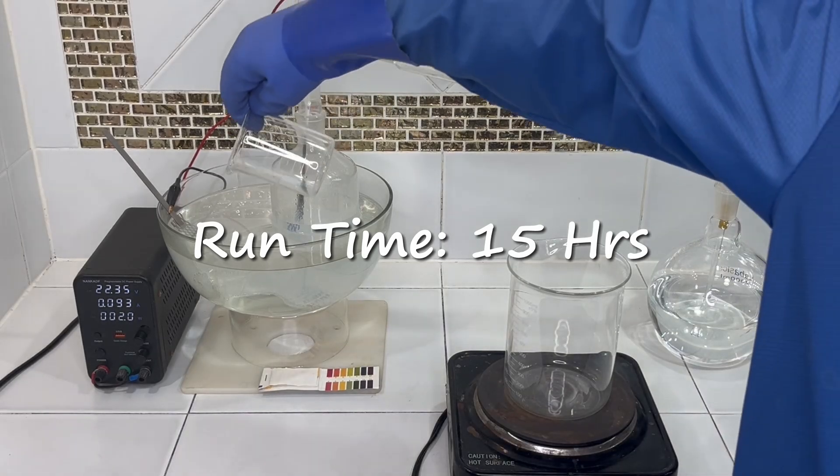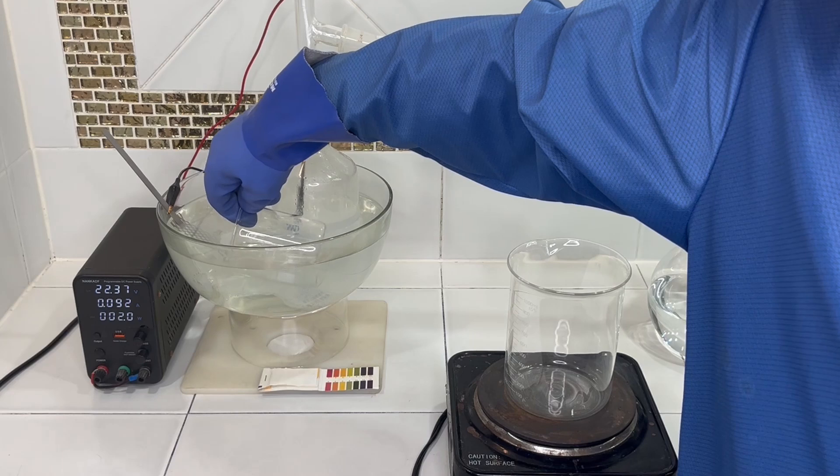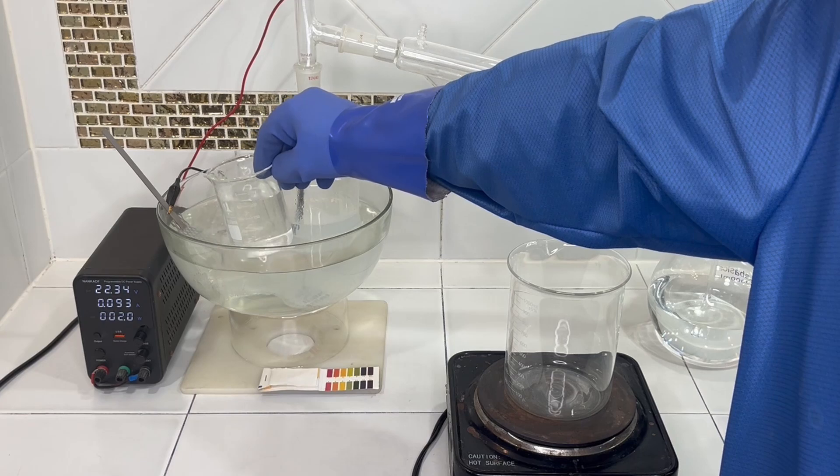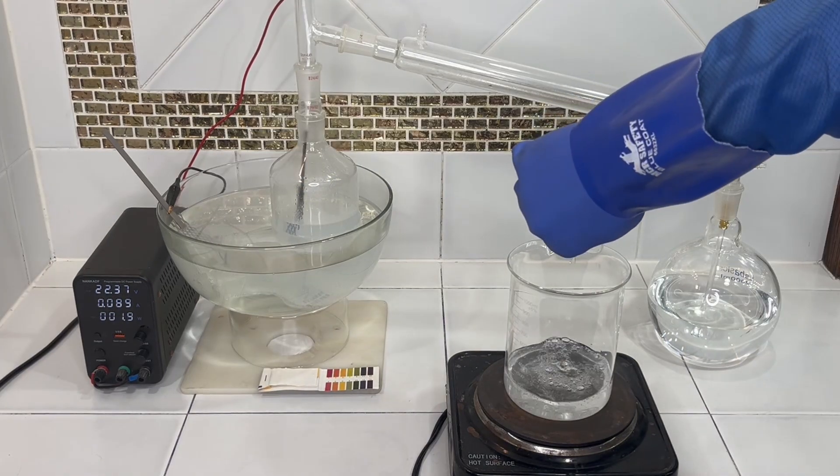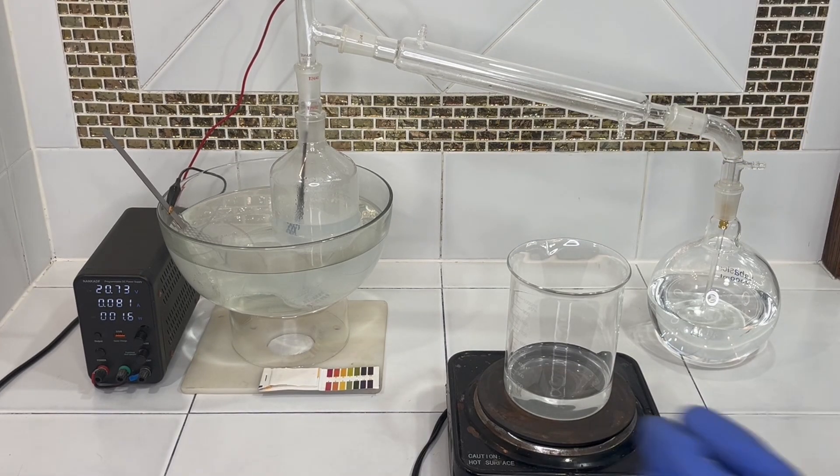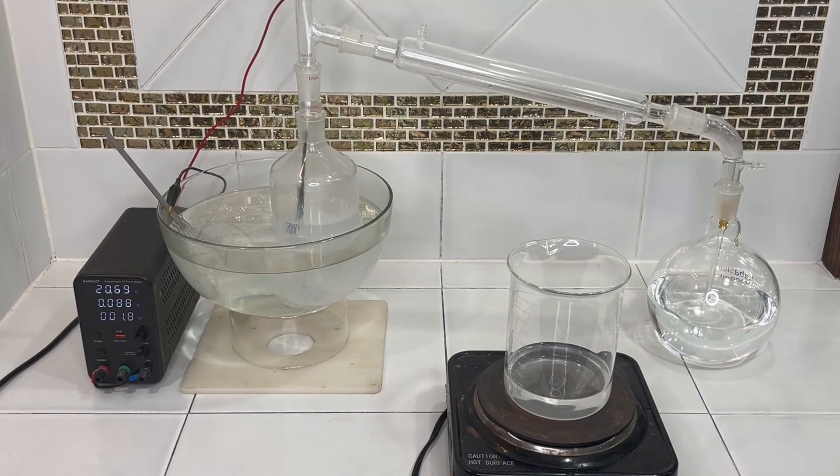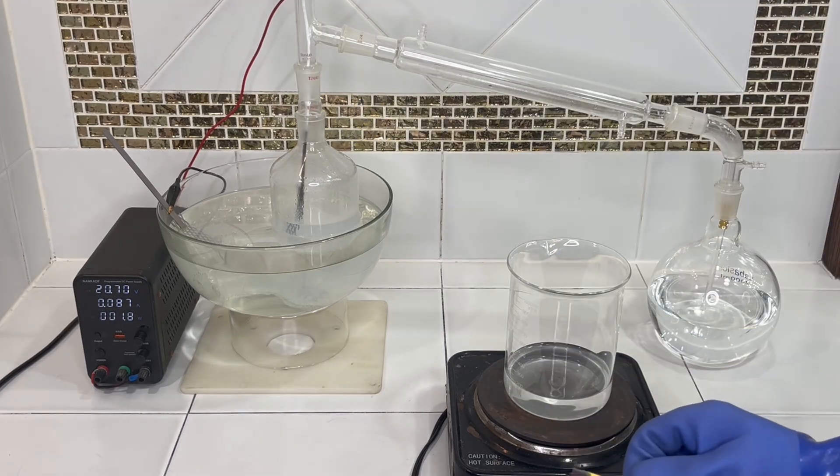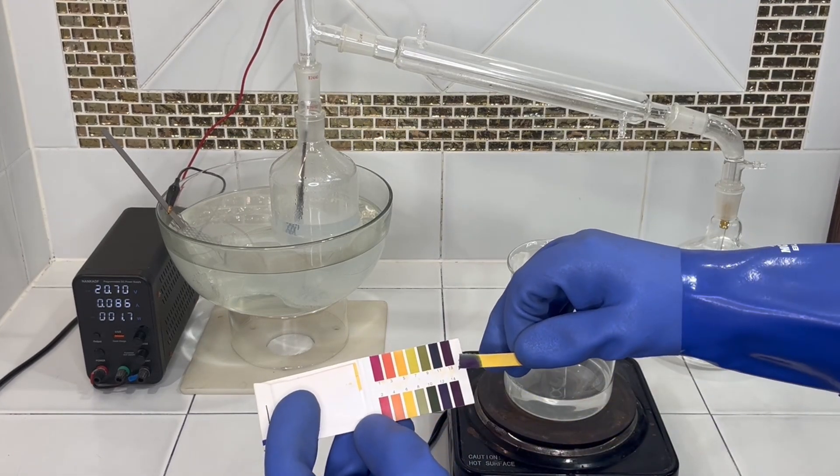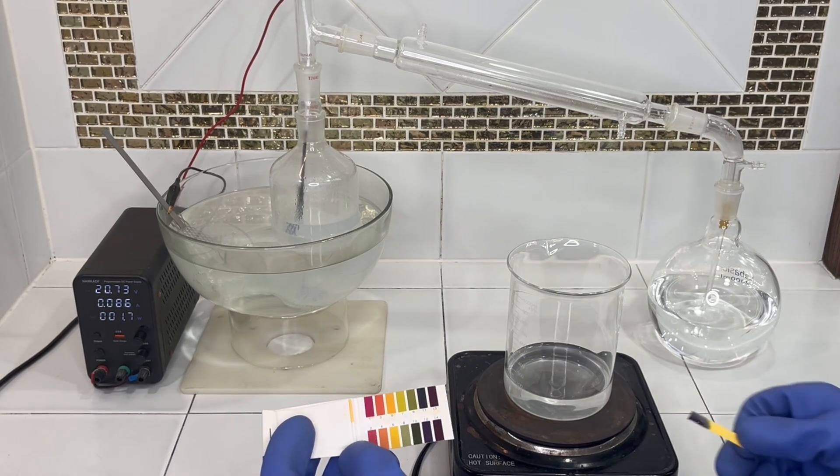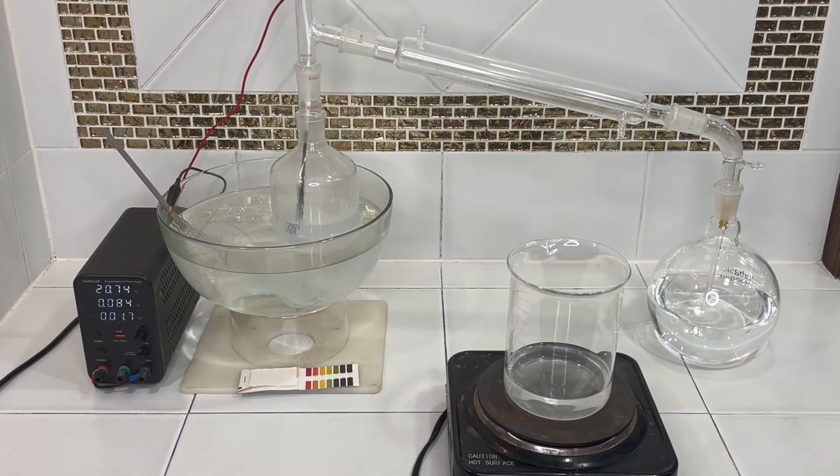So our solution will be fairly dilute at this point. I'm going to pull out about 200 milliliters, and we're going to evaporate off some of the water and concentrate our sodium hydroxide. And while we're doing that, I'm going to take a final pH test. It looks like 13, 14. So we're going to have a highly basic solution. Then we'll get this evaporated down to get our dry sodium hydroxide.